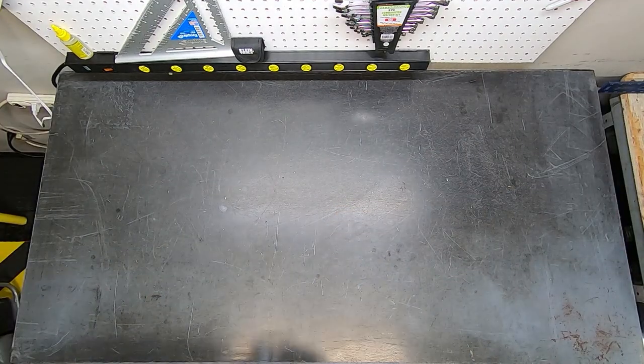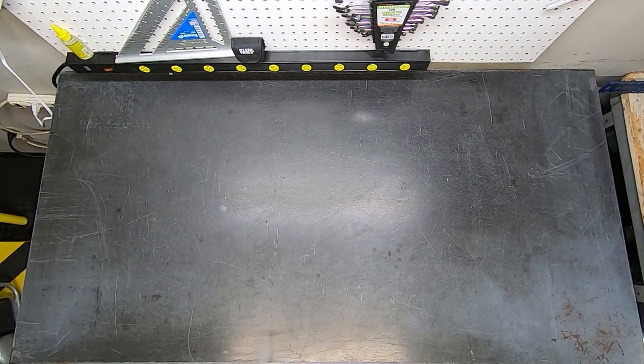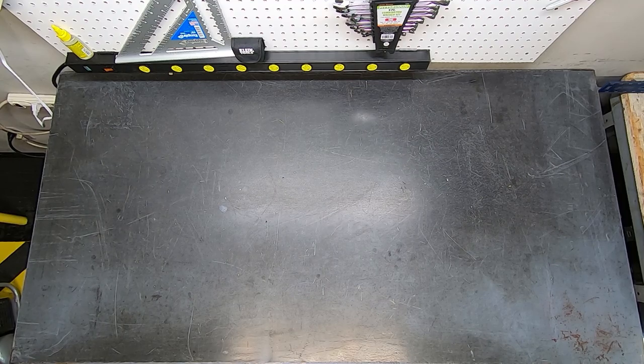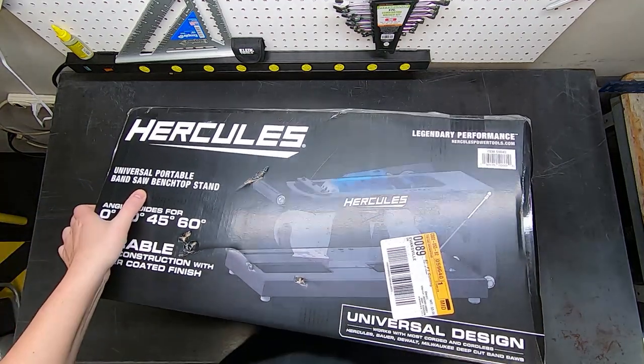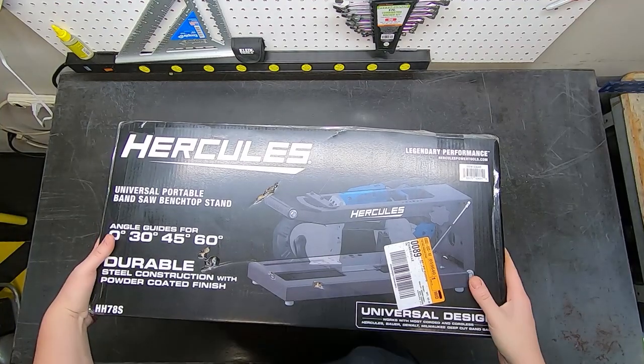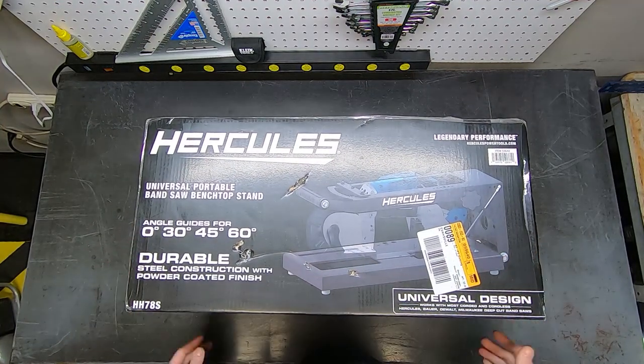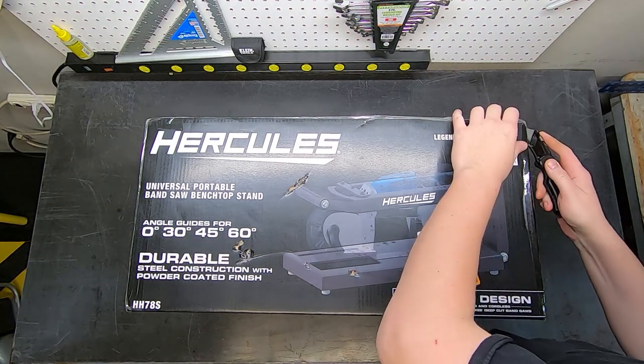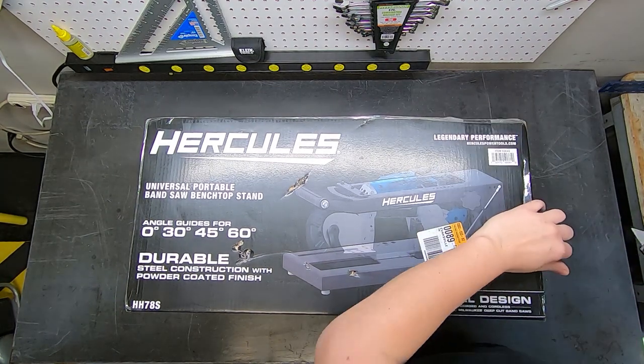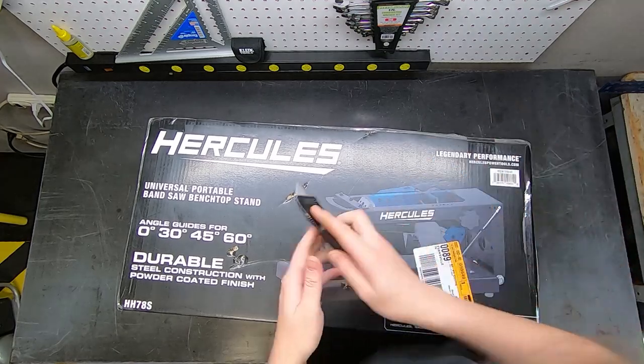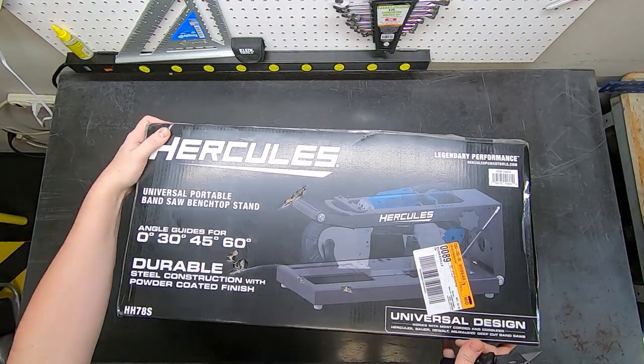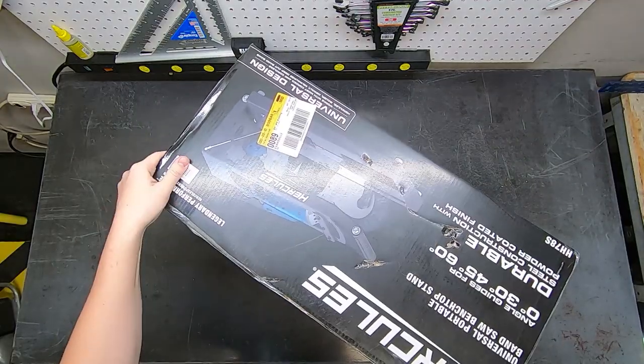I was on Harbor Freight's website the other day looking at portable bandsaws, and I obviously saw the Bauer that I knew they had for sure. But in searching for that, I also found a Hercules bandsaw stand that does vertical or horizontal cuts. So I went out the next morning. I woke up at about 8:30, which is unheard of for me. I wanted to get there as soon as possible to buy this thing.